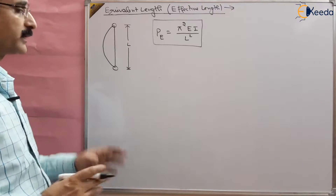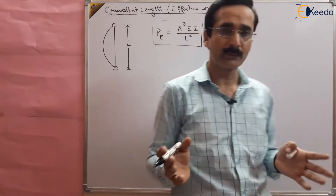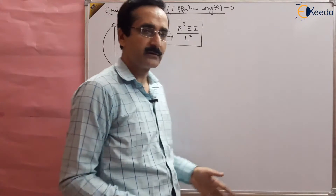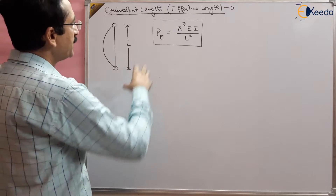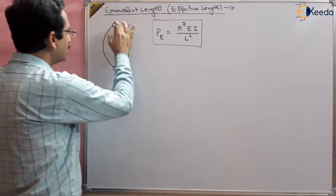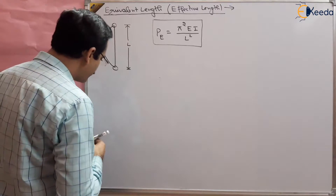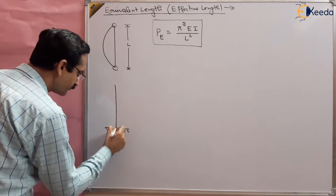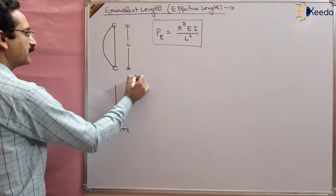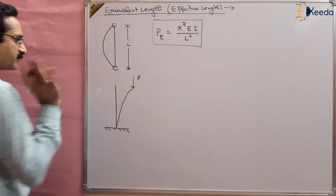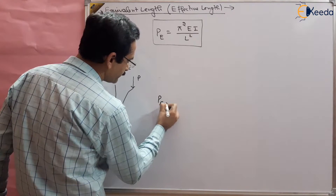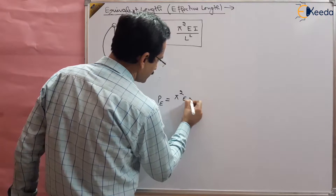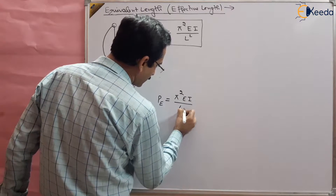But for other end conditions we get different loads. So if we want to replace other end conditions and summarize them with an equivalent formula, we need the concept of equivalent length. Suppose we have one end free and the other fixed — in this case the Euler's load is π²EI/4L².